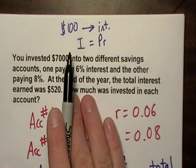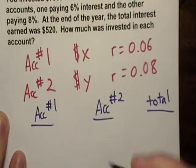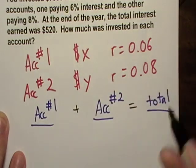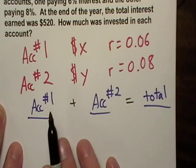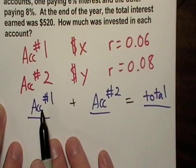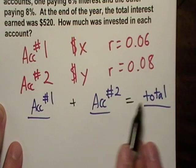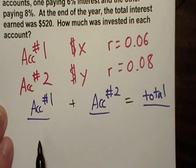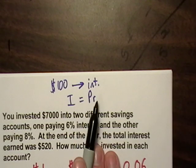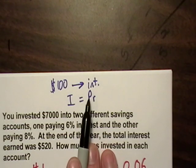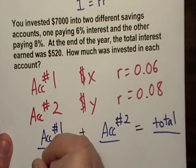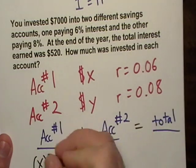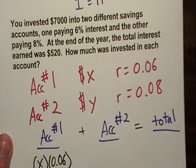It'll be the interest from account number one plus the interest from account number two. Account number one's interest plus account number two's interest equals total interest. Well what is the account number one interest? Remember, it's the principal times the rate, which I don't really know what the principal is, but I know what the rate is. So I call the principal X dollars, and we'll just write it as X multiplied by 0.06.